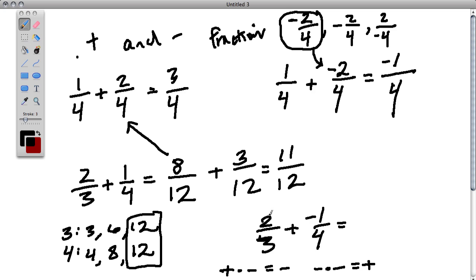So 2 thirds, we multiply the top numerator and the bottom denominator by 4 and got 8 twelfths. Now, negative 1 fourth, we're multiplying the numerator, negative 1 by 3, and 4 by 3, the denominator.